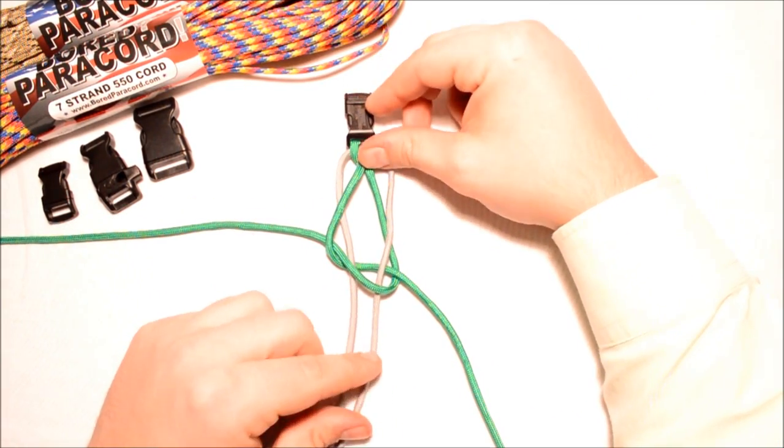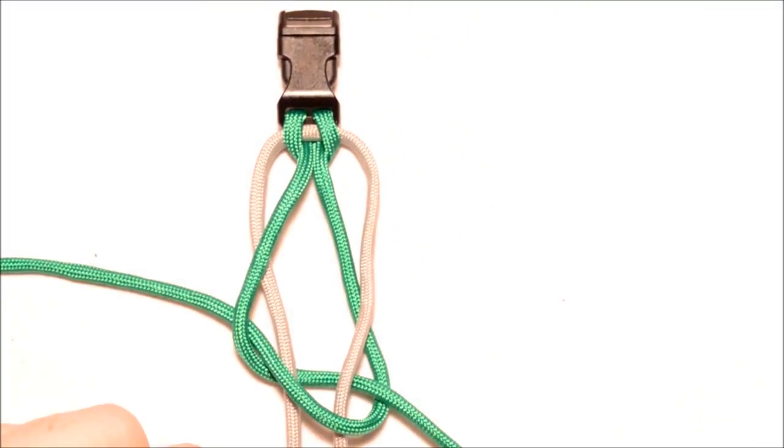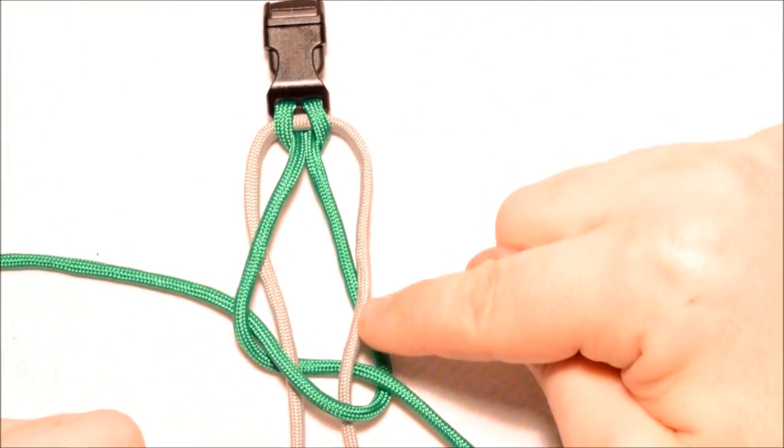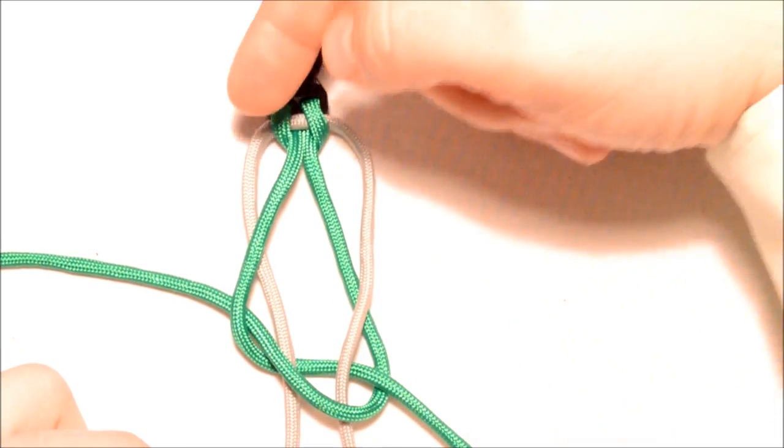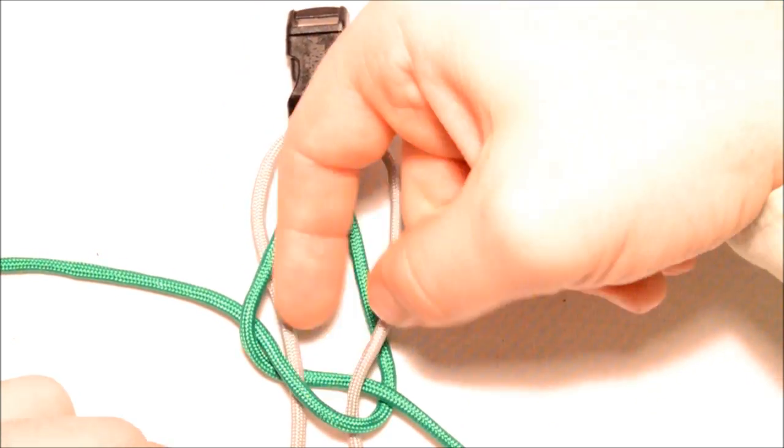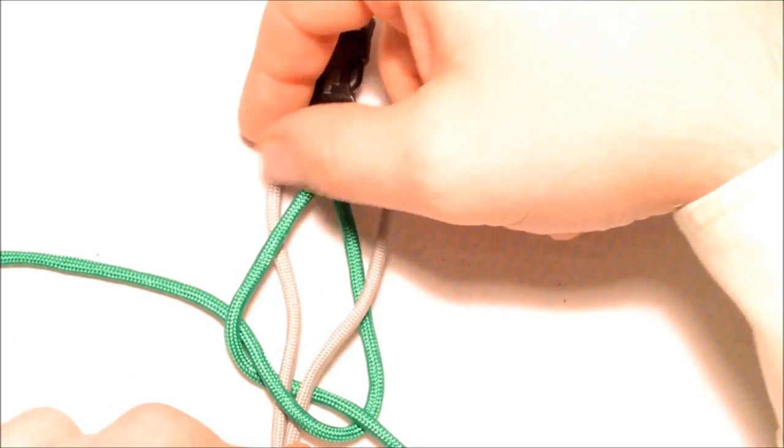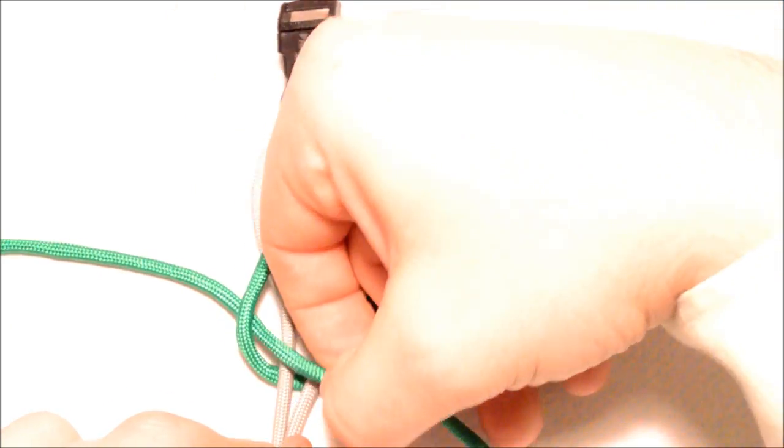So now you'll have something that looks like this. You're going to have one gray cord going over this green. I'm just going to move in a little bit. You're going to have one of your gray cords going over top of the center green and through that loop. One of the gray cords going under the center and then through that same loop. So once this gray one goes through, and you have them together, they go through the same loop.